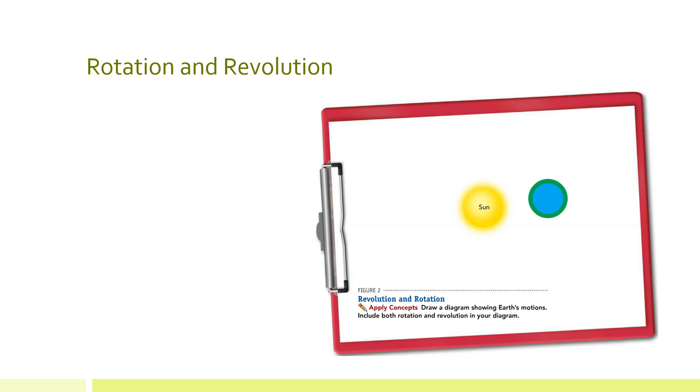Now I have to include Earth's rotation in my diagram. To rotate means to spin or turn in a circle around an axis or center. Earth spins on its axis, so this curved arrow is perfect for showing how Earth spins or rotates. Remember that Earth takes about 24 hours or one day to rotate once.